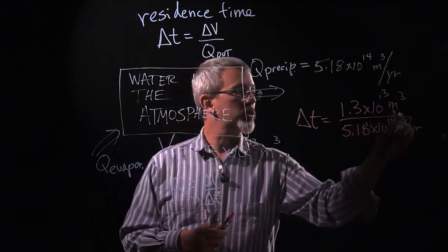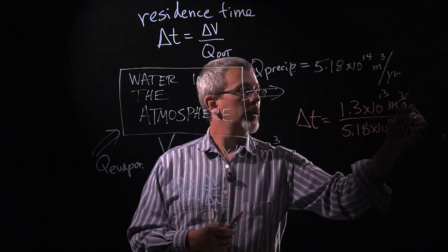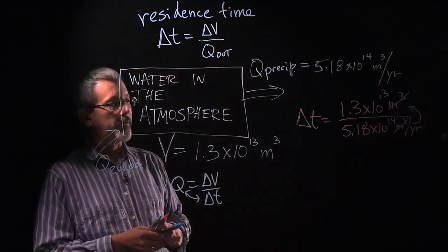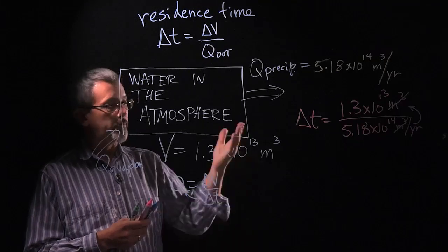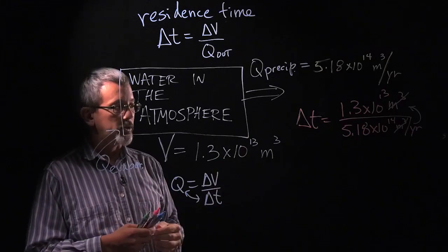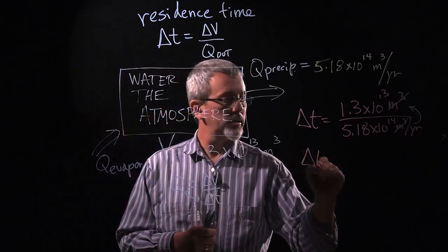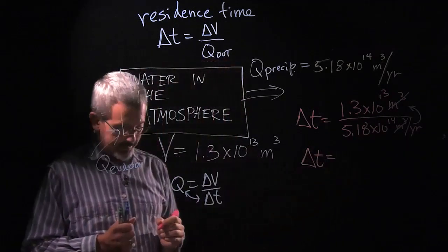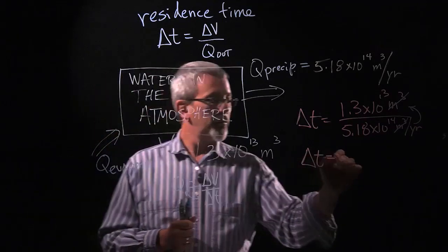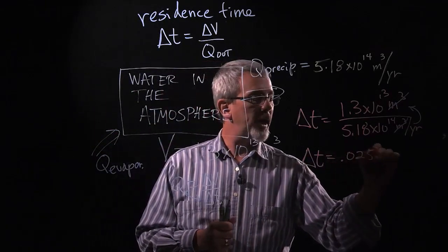Notice the meters cubed is going to cancel out and the unit in years being in the denominator of the denominator will move up to the numerator and we'll get an answer in years. Well, that answer ends up being the residence time here, 0.025 years.